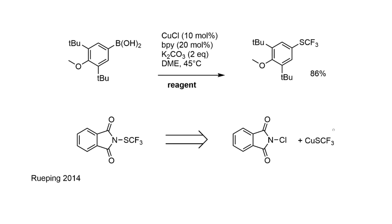Milder methods have now become available. A 2014 paper from Magnus Rueping describes a phthalamide-based reagent: N-chlorophthalamide is reacted with trifluoromethylthiocopper to form an N-SCF3 reagent, which in the presence of further copper(I) salts with 2,2'-bipyridine as ligand, under much milder conditions — 45°C in DME — achieves trifluoromethylthiolation of aryl boronic acids in good yields, for example 86% for one substrate.